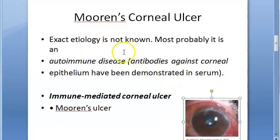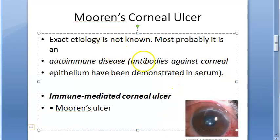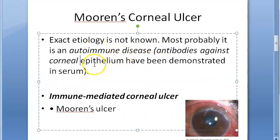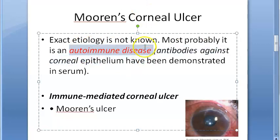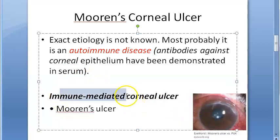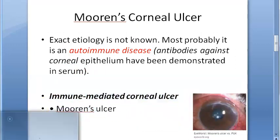The exact etiology is unknown, but they think it is probably an autoimmune disease. Antibodies against the corneal epithelium have been demonstrated, confirming an autoimmune basis. So if asked what the immune-mediated corneal ulcer is, the answer is Mooren's ulcer.